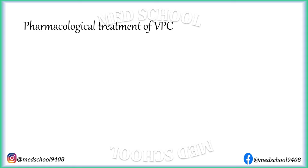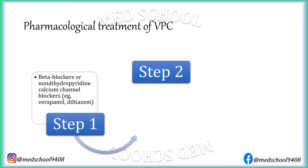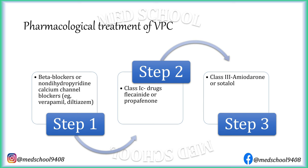Pharmacological treatment of VPC is done in a step-wise manner. In step 1, beta blockers or non-dihydropyridine calcium channel blockers like verapamil or diltiazem are used. If there is no relief, then in step 2, class 1C antiarrhythmic drugs like flecainide or propafenone are used. If still no relief, then in step 3, class 3 antiarrhythmics like amiodarone or sotalol are used. It is important to remember that the aim of treatment is not to suppress VPCs but to relieve symptoms.